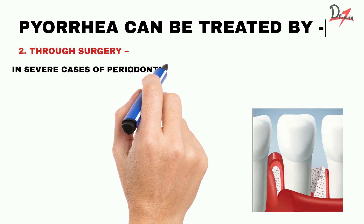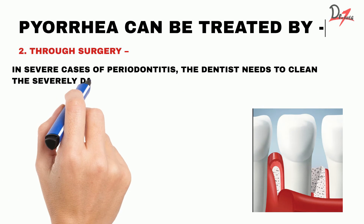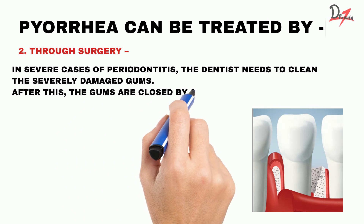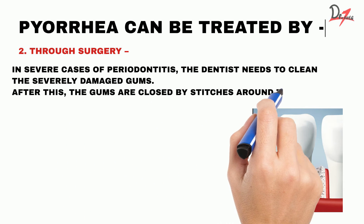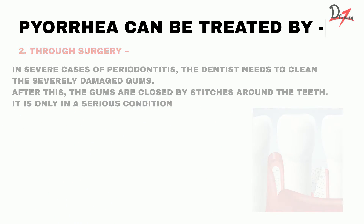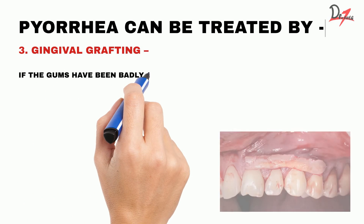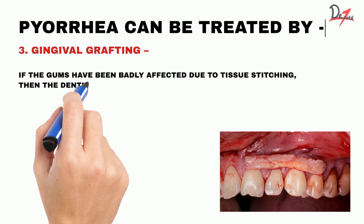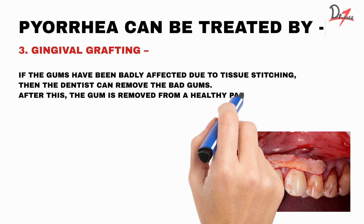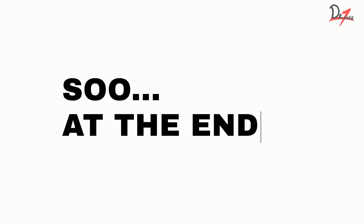Through surgery, in severe cases of periodontitis, the dentist needs to clean the severely damaged gums, after which the gums are closed by stitches around the teeth — this is only done in a serious condition. Gingival grafting is another option: if the gums have been badly affected, gums from a healthy area will be removed and stitched in the affected place.